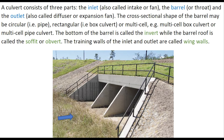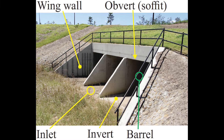The training walls of the inlet and outlet are called the wing walls. This photograph illustrates the inlet and barrel entrance of a multi-cell box culvert.